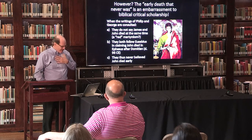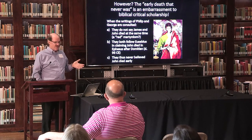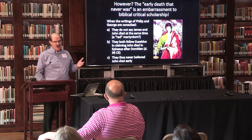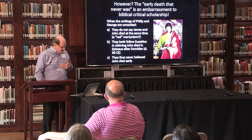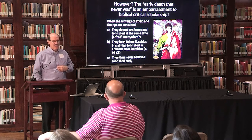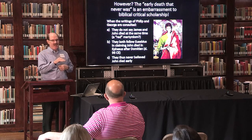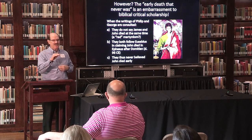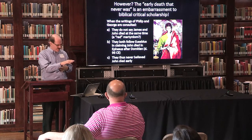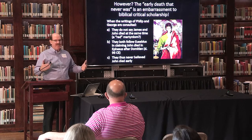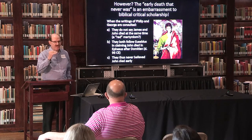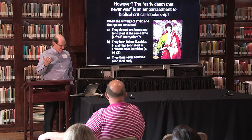The early death of John is an embarrassment to critical scholarship. My mistake is that I actually read Philip and George. First of all, they never say that James and John died at the same time. Martyrdom, yes — but was it a red martyrdom or a different sort? Second, they both follow Eusebius in claiming that John the Apostle died in Ephesus after Domitian. So they never believed that, and they never would have believed DeBoer's article. Critical scholars did without having read the original sources. Nobody believed John died early until the 19th century. It's an embarrassment to critical scholarship.